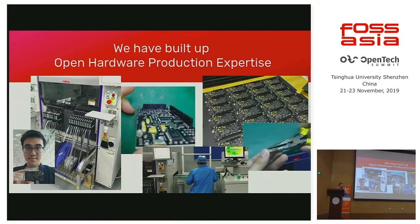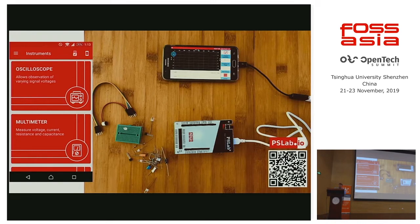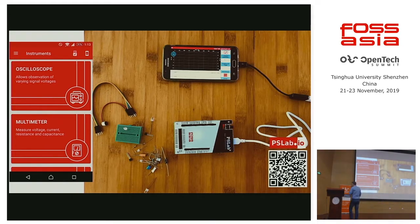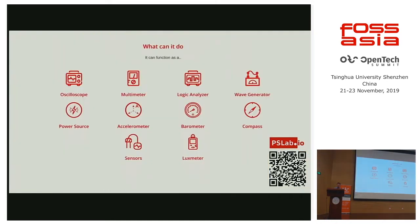One of the projects we do in hardware is the Pocket Science Lab. It's an instrument to measure all kinds of things, and there's a QR code — though we need to also get it into the Chinese app stores, as this is currently the QR code for the Google Play Store. You can have an oscilloscope and a multimeter — it's all on the Android app, and we also have a desktop app. Features include a Logic Analyzer, Wave Generator, Power Source, and Accelerometer. We're constantly adding more instruments and implementing them in the firmware and software.